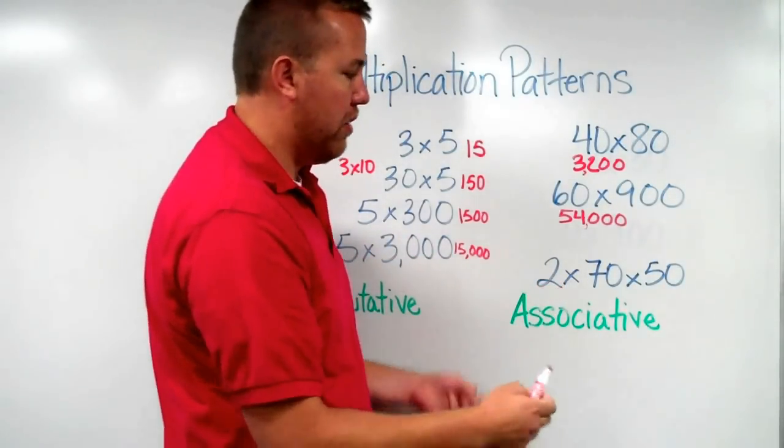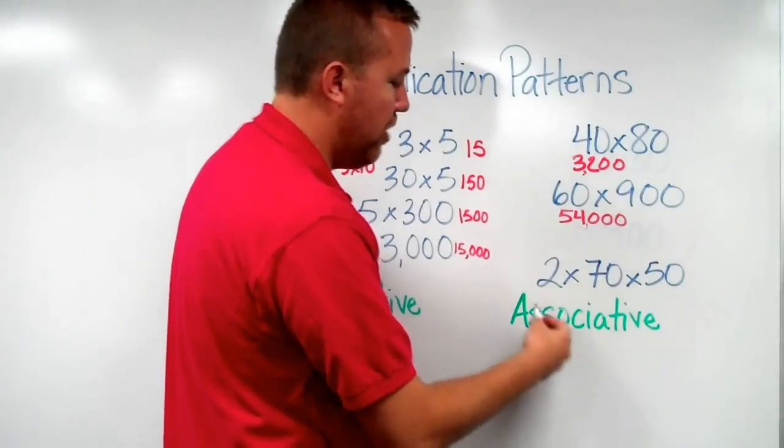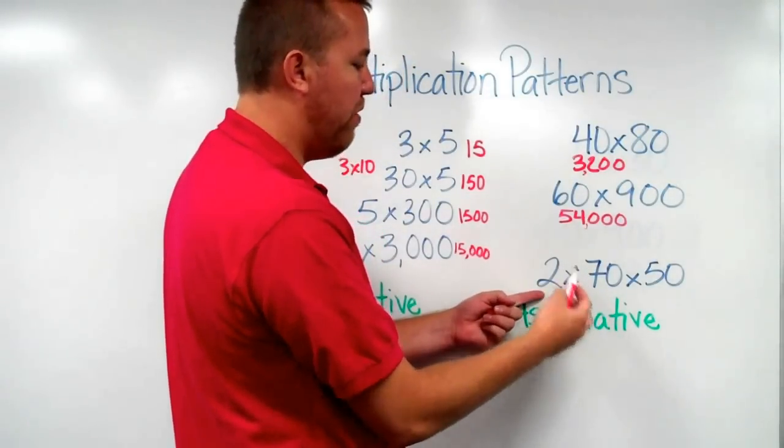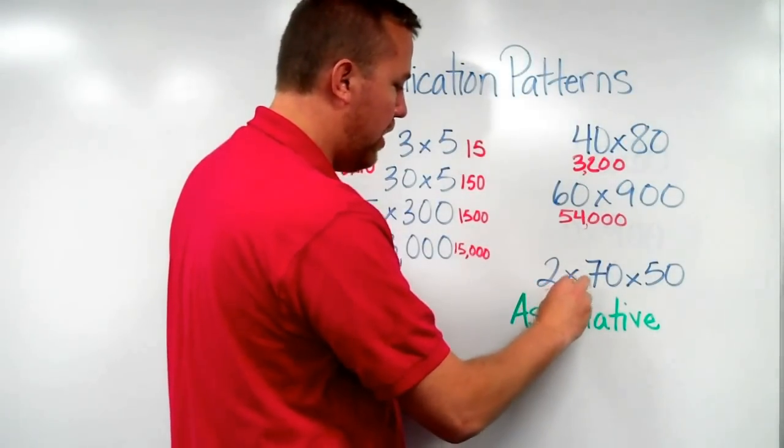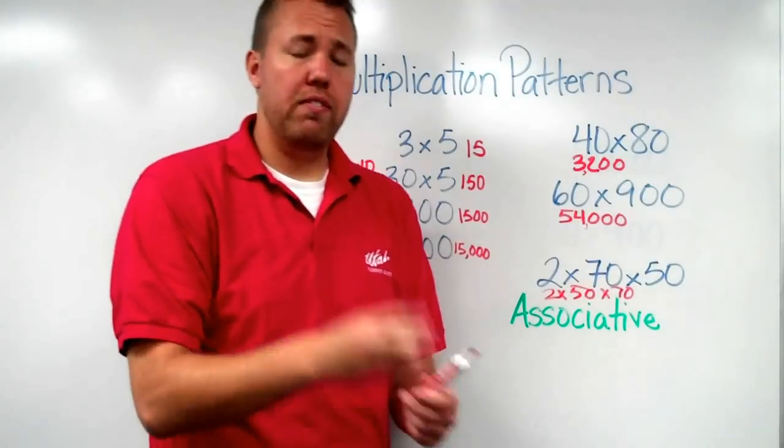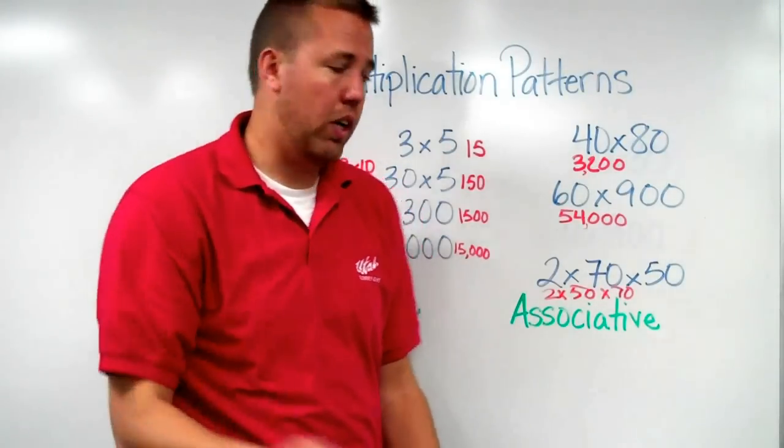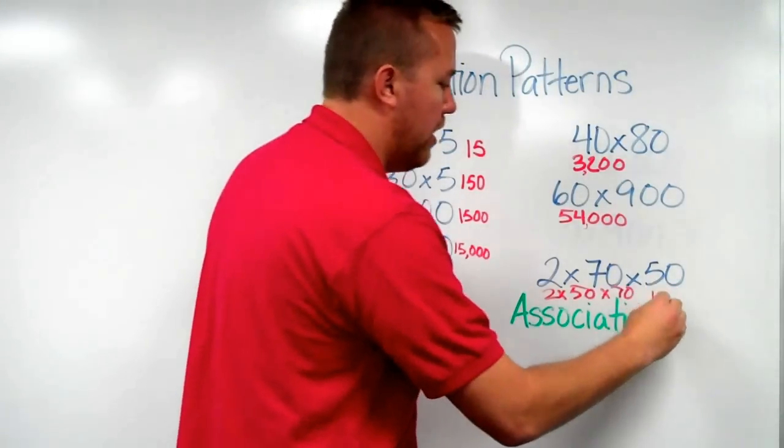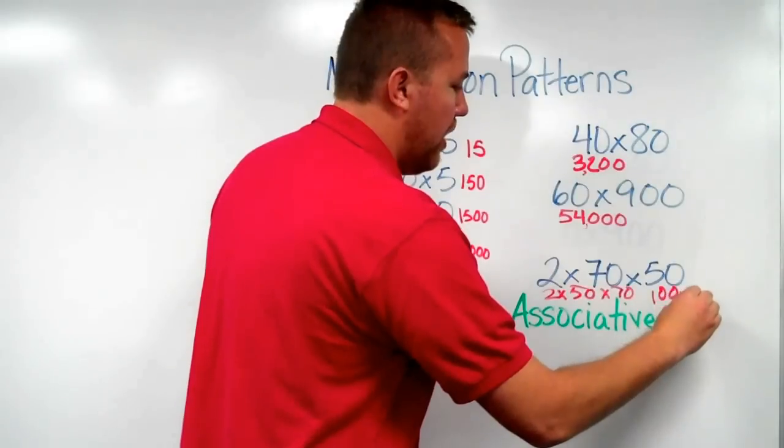Associative, we can also change the order of the factors. So I might do 2 times 50, 2 times 50 times 70, because I know 2 times 50, just like that, it equals 100. Now, 100 times 70,